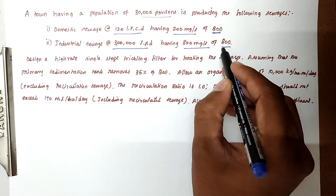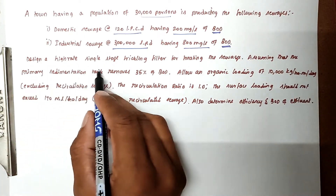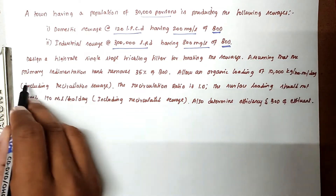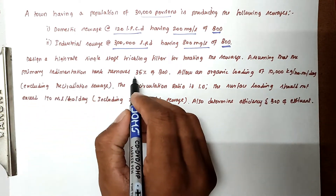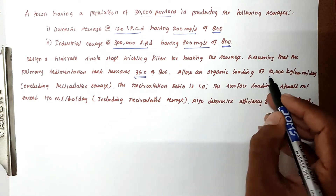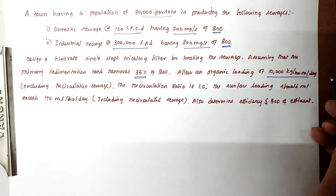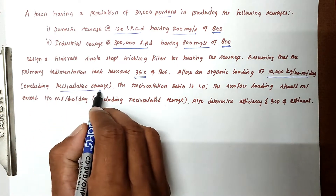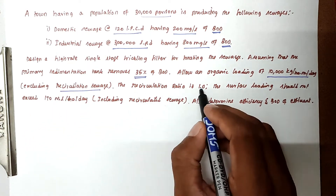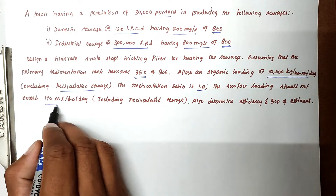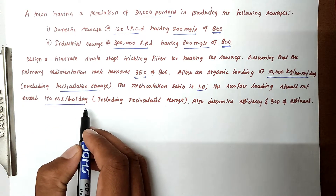These BODs are initial BOD. Design the high rate single stage trickling filter for treating the sewage, assuming that the primary sedimentation tank removes 35% of BOD. Allow an organic loading of 10,000 kg per hectare meter per day, excluding recirculation sewage. The recirculation rate is 1.0, and surface loading should not exceed 170 million liters per hectare per day, including recirculation sewage.